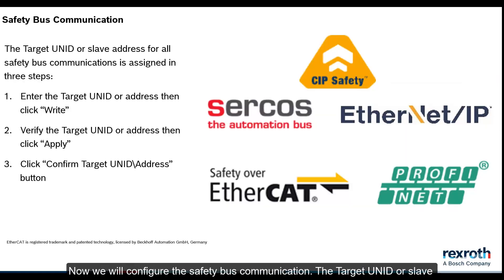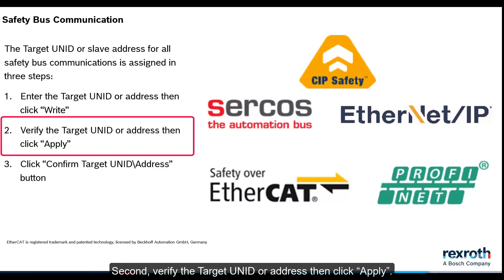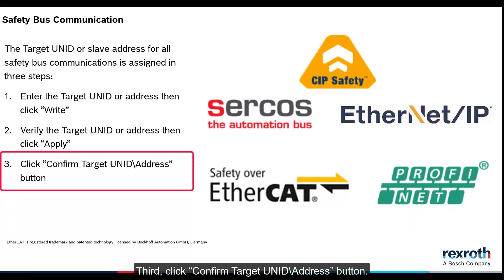Now we will configure the safety bus communication. The target UNID or slave address for all safety bus communications is assigned in three steps. First, enter the target UNID or address, then click write. Second, verify the target UNID or address, then click apply. Third, click confirm target UNID address button.